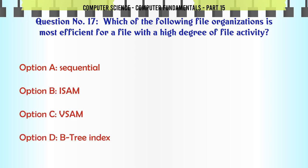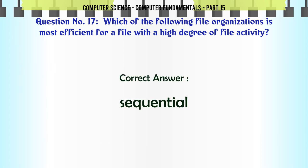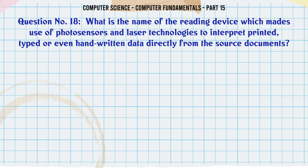Which of the following file organizations is most efficient for a file with a high degree of file activity? A. Sequential B. ISAM C. VSAM D. B-tree Index. The correct answer is Sequential.